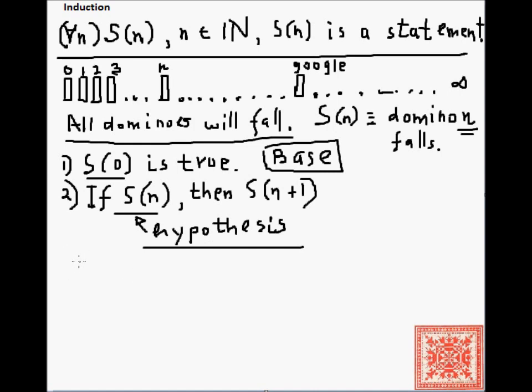So, what we get in this case is a sequence of statements. We start from s(0), and s(0) is true. I knock the first domino off. And then, since I proved the second statement, I know that if s(0) is true, if domino 0 falls, then domino number 1 falls. So, s(1) is true, and if s(1) is true, then s(2) is true, domino number 2 falls.